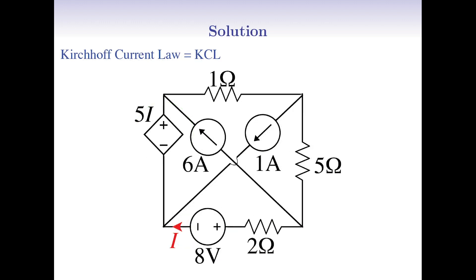To analyze any electrical circuit we employ Kirchhoff's laws. Kirchhoff's current law or KCL states that the amount of incoming current to a node is equal to the amount of outgoing current from that node. KCL is basically the statement of the conservation law of current. Kirchhoff's voltage law or KVL states that the algebraic voltage sum in a loop or mesh is zero. KVL is basically the statement of the conservation law of voltage. Generally speaking, KCL and KVL are aspects or restatements of the conservation law of energy in physics.